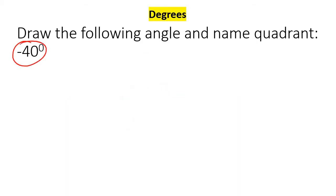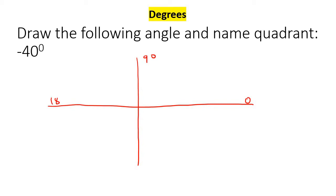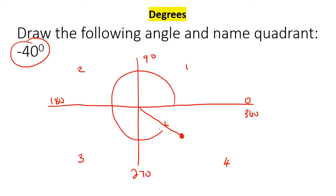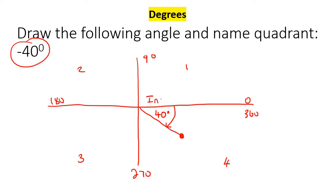Now this one's pretty cool because it's negative. So let's draw x and our y-axis. Remember this is 0, 90, 180, 270, 360, and quadrants 1, 2, 3, and 4. Now we're going to start at the initial side like we always do, but now we're going to go negative 40. So we're going to go backwards — 40 degrees backwards — so 40 degrees is probably about there. And then you can show the angle going this way. Notice we're not going to go the other way around because we have a negative angle. And that angle is 40 degrees. Initial and terminal.